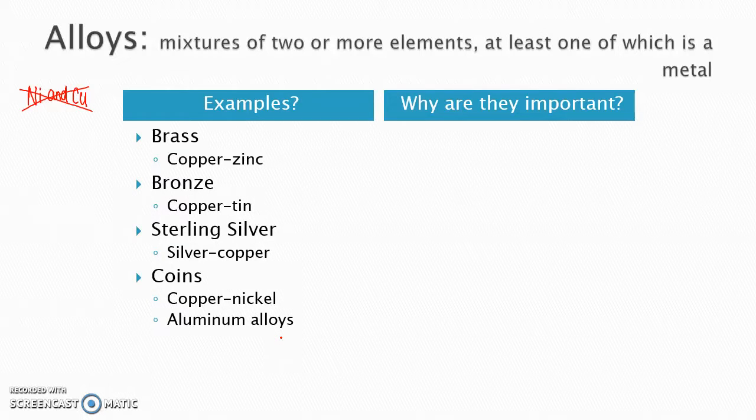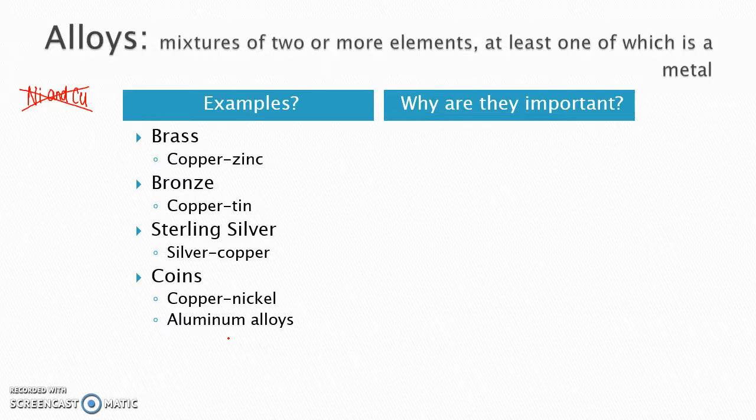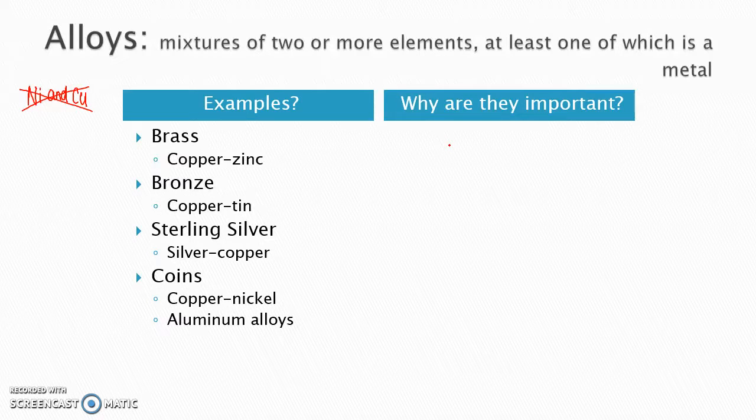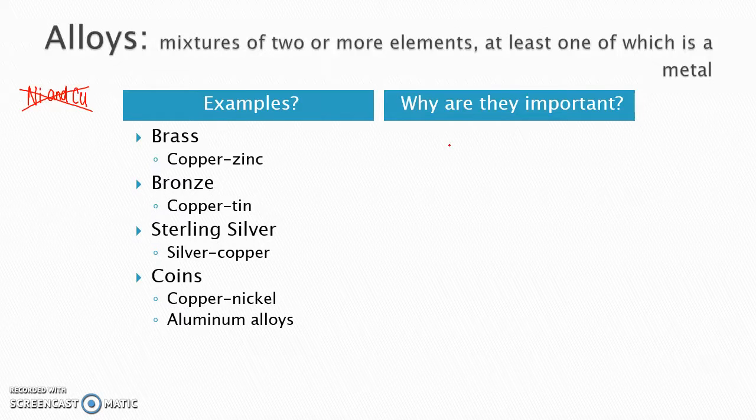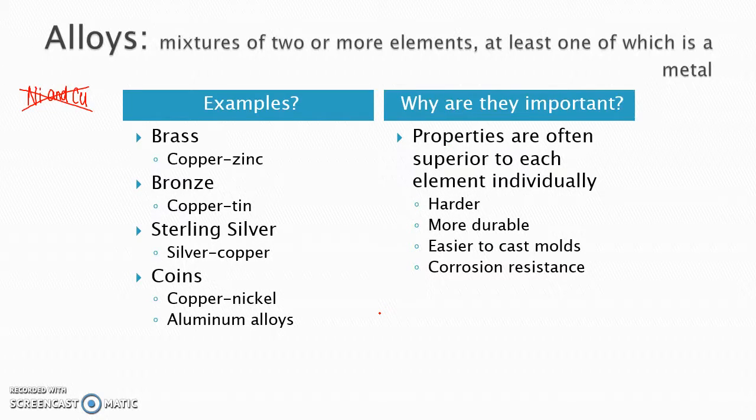So you know a lot of examples. The more important thing, what I want you to know for your test, is why are they important? So why do we care about them? Why do we make them? Why do they exist? And looking at that list, you may already kind of have an idea. For me, I buy sterling silver jewelry because it's cheaper. So that is a reason you can make things that are cheaper. Our coins, kind of the same thing. We don't want the coin itself to be worth more than what its value should be, so we make it into an alloy so it's cheaper. But chemically, what you should care about more for this class, is that its properties, so its physical properties, are superior to each element individually. That's usually the reason why the alloy exists.